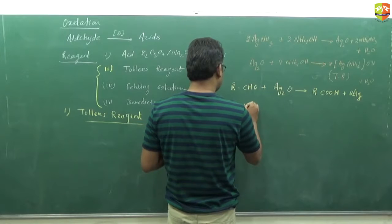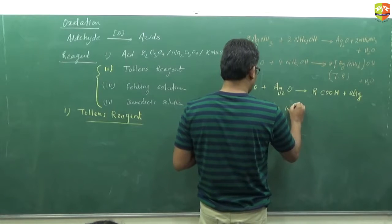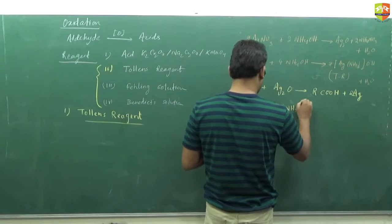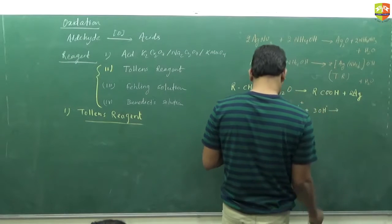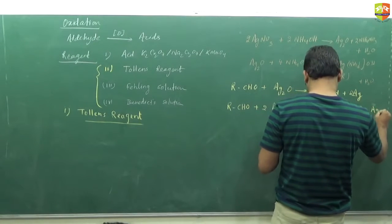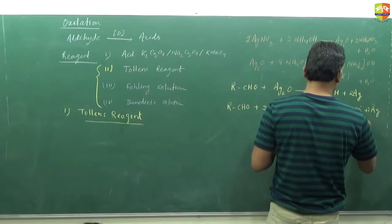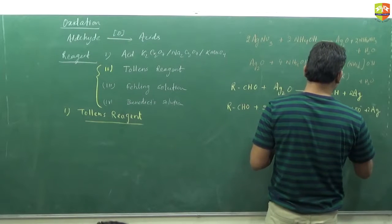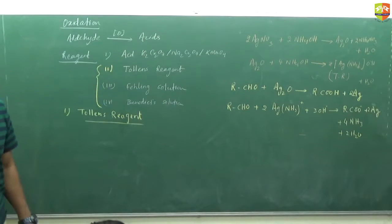Other reaction: RCHO reacts with 2Ag(NH3)+ plus 3OH- and gives RCOO- plus Ag plus 4NH3 plus 2H2O. Carboxylic acid does not form, we get ion because the reaction is in basic medium - OH- is there.